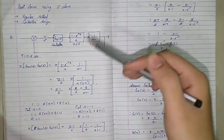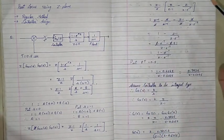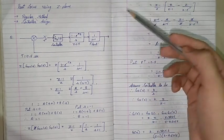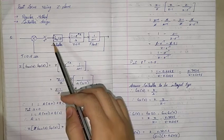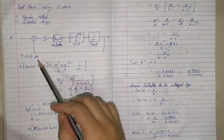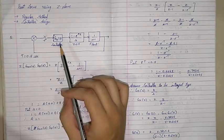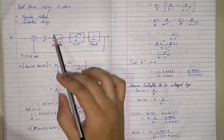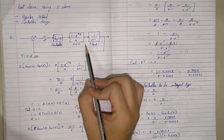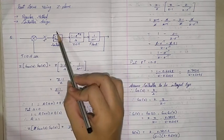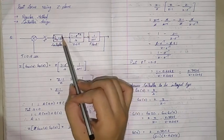I will be explaining how to find a root locus by using an example. The steps will be similar for any other question as well, because the variations will be nothing but the change in the transfer function for the plant and the value of time T. In this question we have a controller, ZOH, and plant, with T equal to 0.5 seconds. There is a sampler before the controller, so we cannot combine all three and find the Z transform directly.